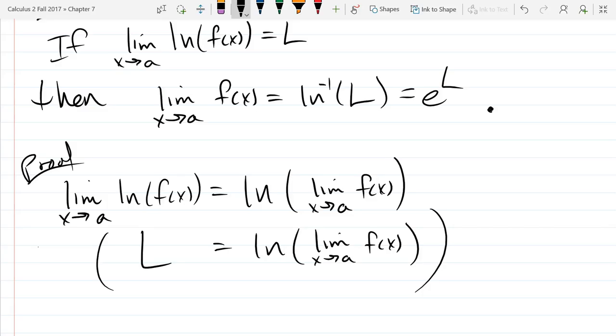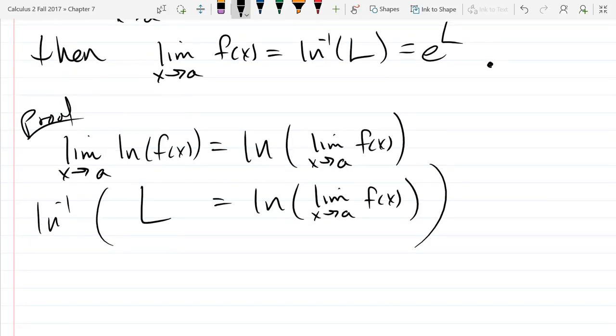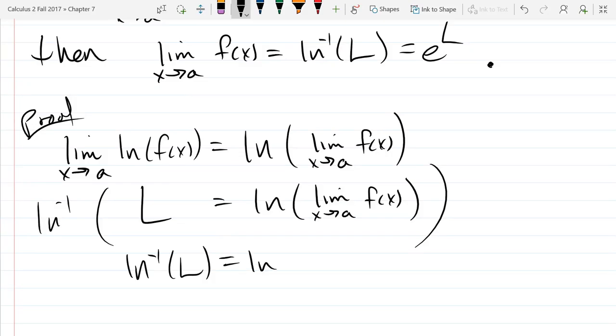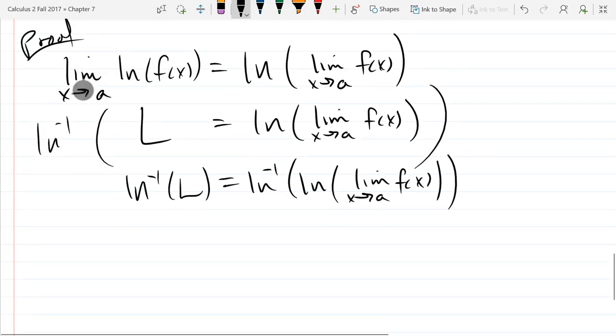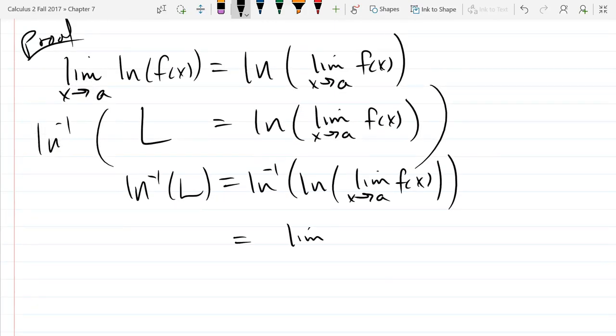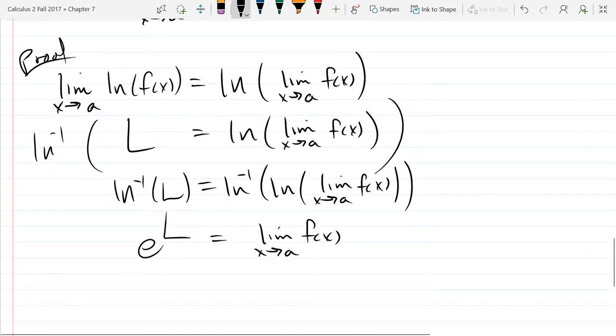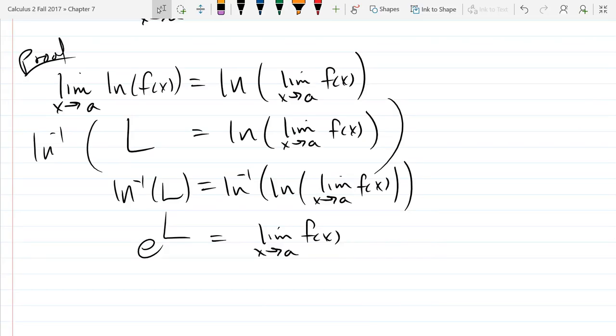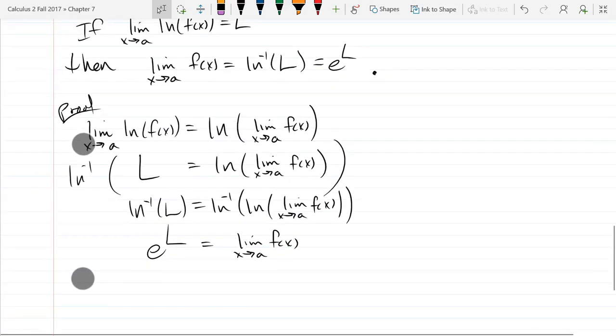So you could write it like this. I'm ln inversing both sides. And it's probably not worth writing ln inverse of ln. We know those are going to cancel, but I'll cancel them in the next step. So there's our proof of our theorem. Just use the continuous property. You push that limit through. So not much going on in this theorem right here.